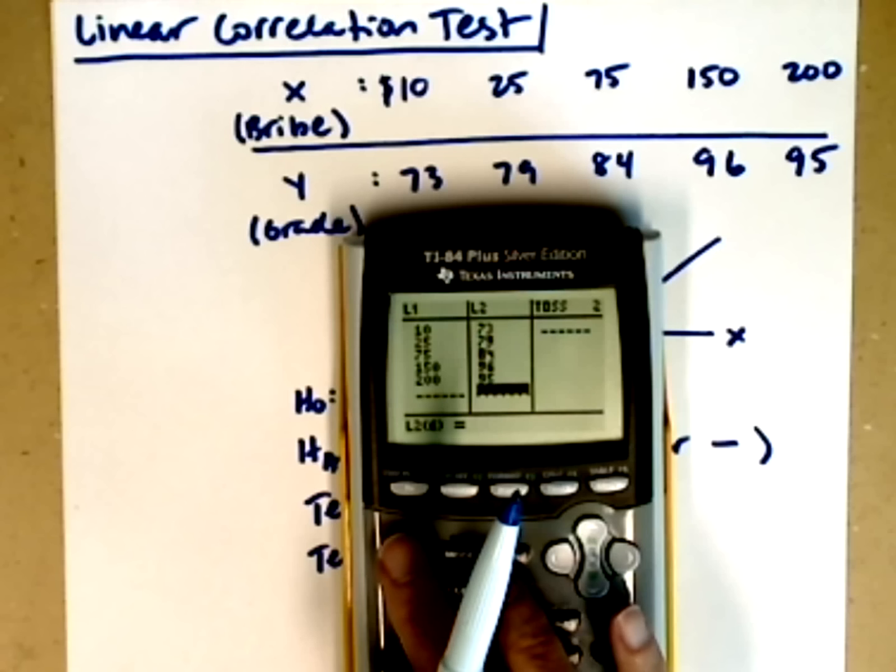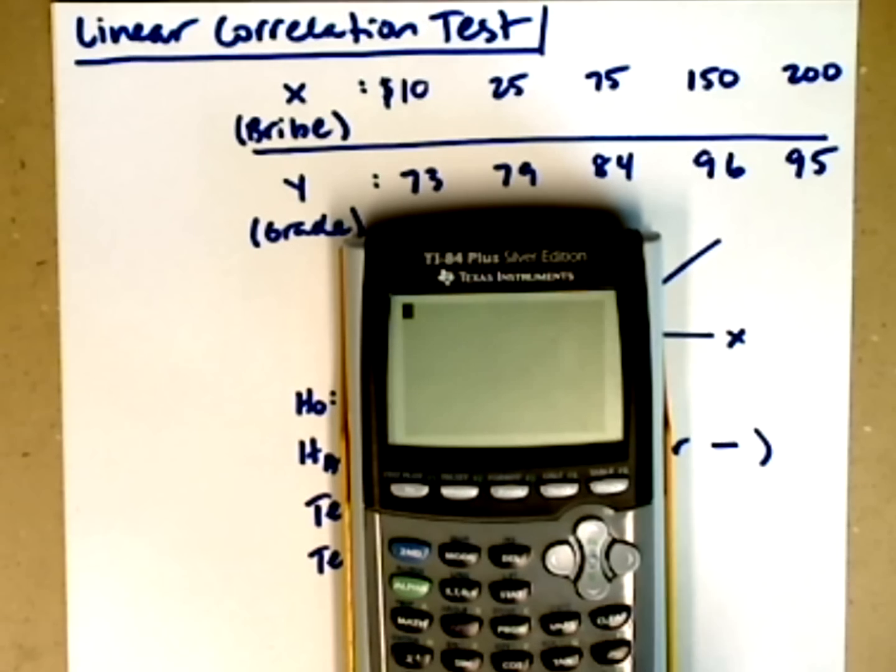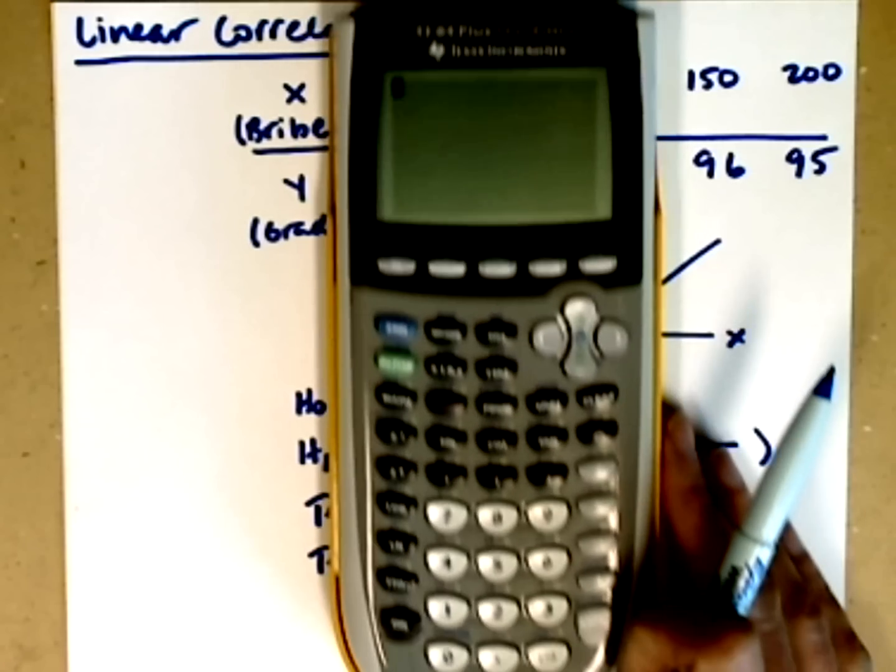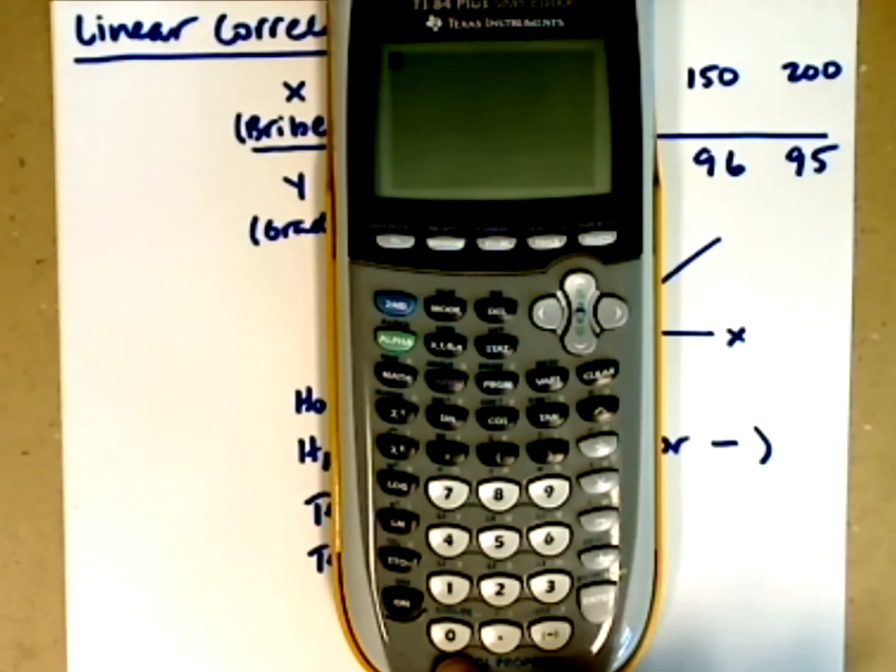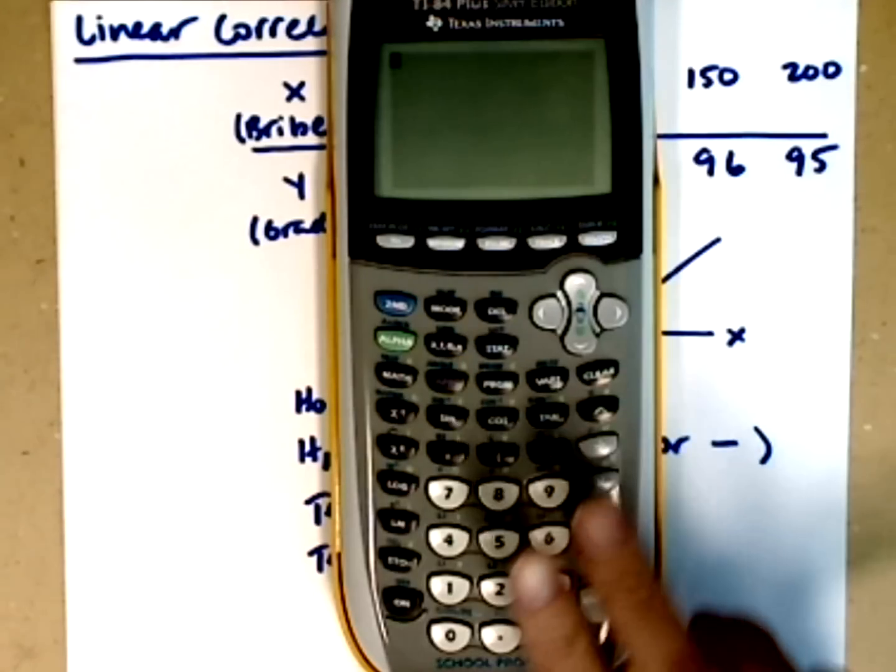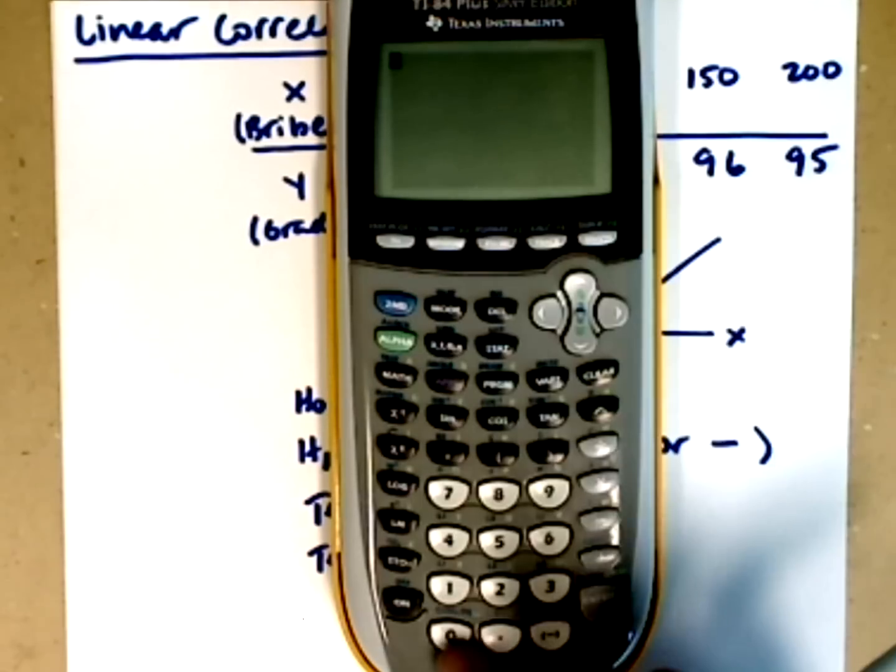I'm going to quit here with my values there, but I need to have you do one thing before your calculator will return the right information. We need to turn diagnostic on. You just need to do this one time. Once you've got it done, you will not need to go back and do it again. In order to do that, I need to bring up the catalog. So I'm in the home screen, I've left the list, I go second catalog.